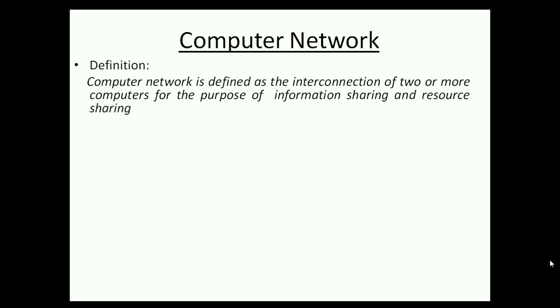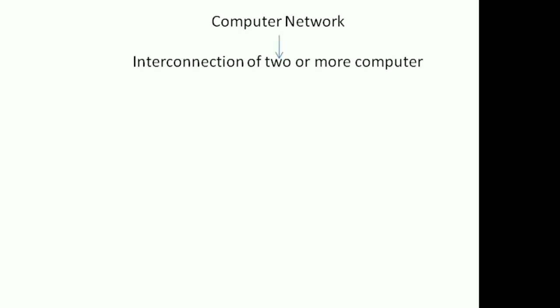Let's discuss the definition: a computer network is defined as the interconnection of two or more computers for the purpose of information sharing and resource sharing. So a computer network is nothing but the interconnection of two or more computers connected to each other.